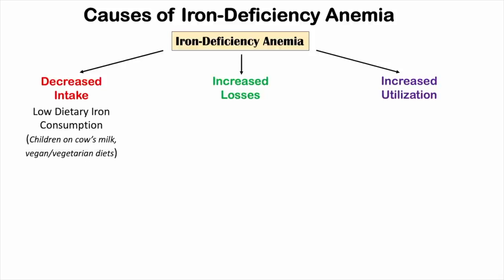In the decreased intake category, one main cause is low dietary iron consumption. If you're not eating enough iron or not getting enough iron in your diet, you're not going to have enough iron to make red blood cells or hemoglobin. So this is going to cause iron deficiency anemia.